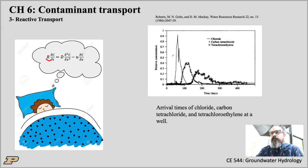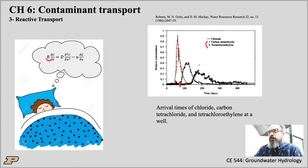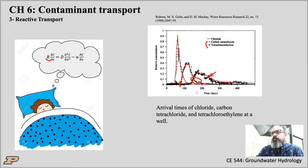On the right-hand side you can see the effect of retardation on three different compounds. Chloride is a conservative tracer — it moves with the water and shows the first breakthrough curve, coming early at around 80 days. Retarded species like carbon tetrachloride and tetrachloroethylene come later. Notice the tailing with retardation — tetrachloroethylene has an even higher retardation and shows more tailing, indicating non-linear retardation.